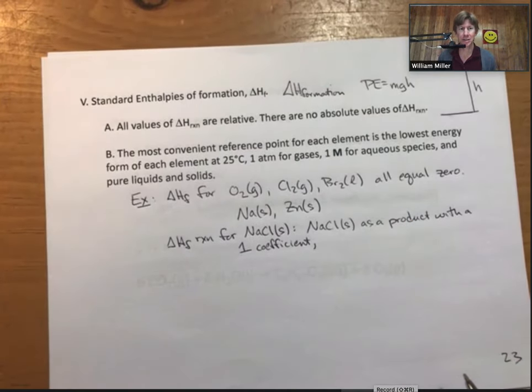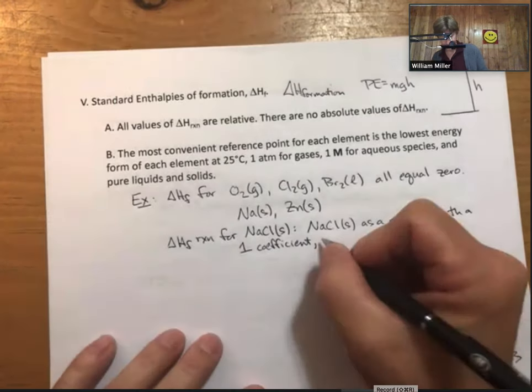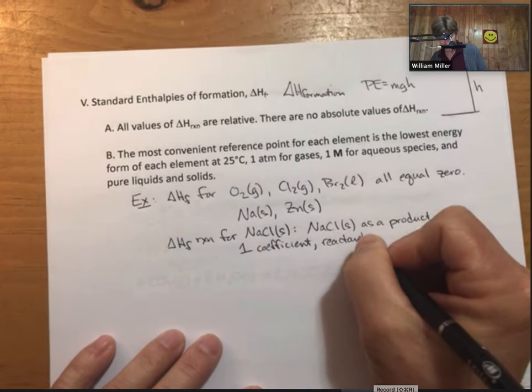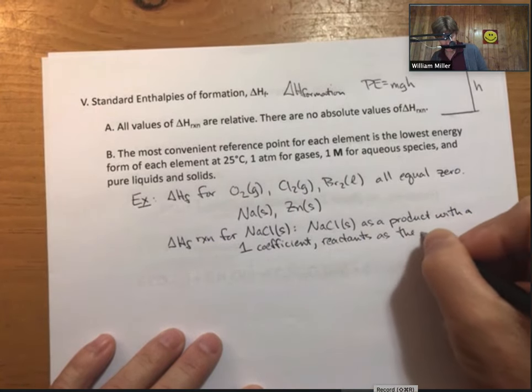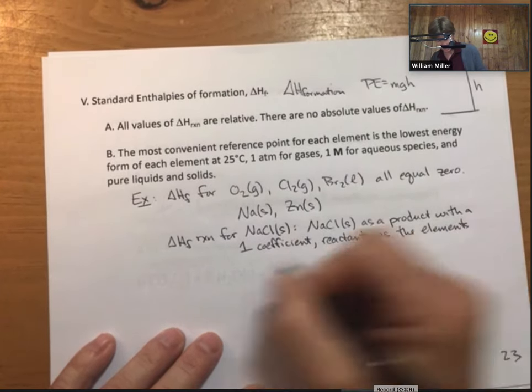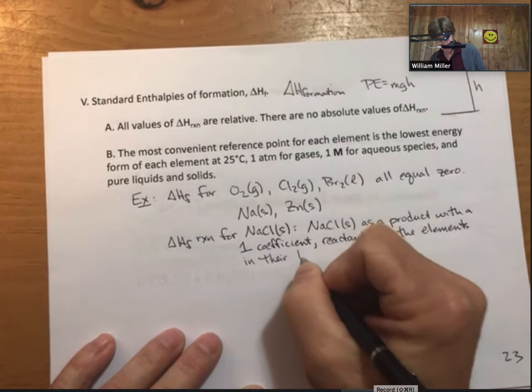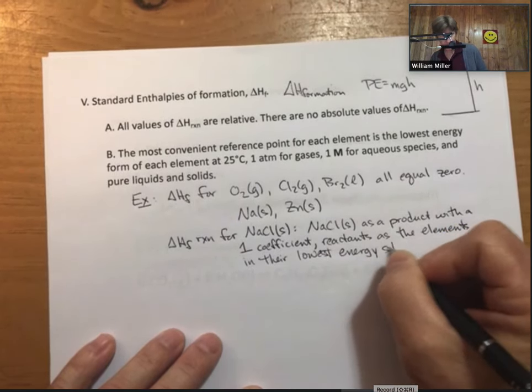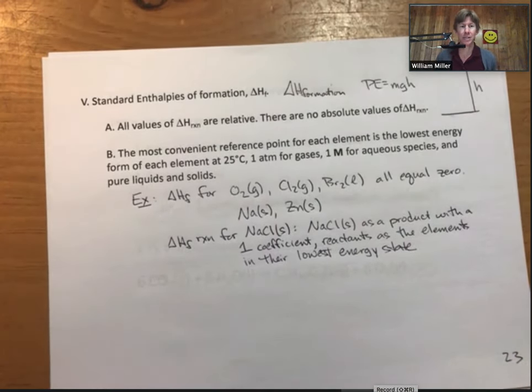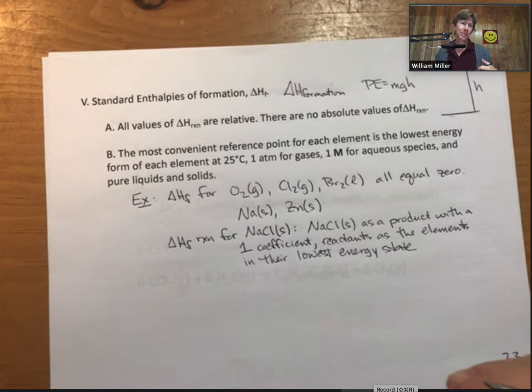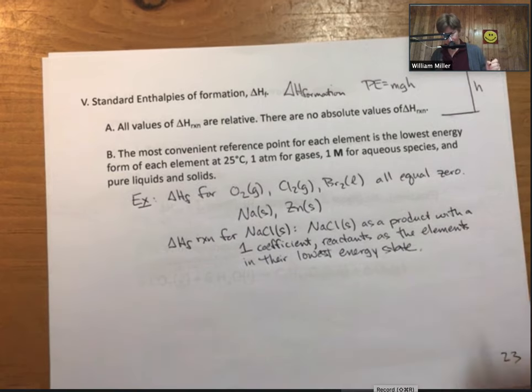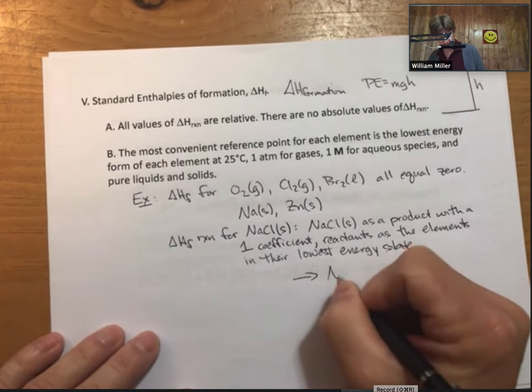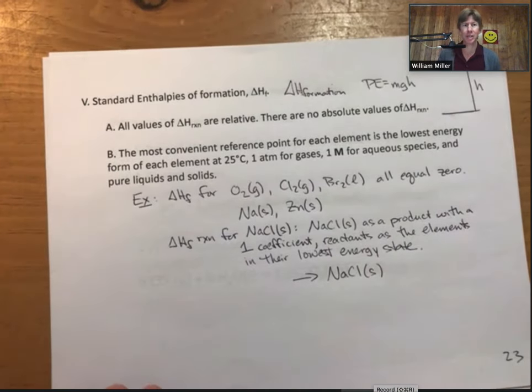It also has reactants as the elements in their lowest energy state with whatever coefficients they need to balance the equation. Alright. So for sodium chloride, that means write sodium chloride as a product.